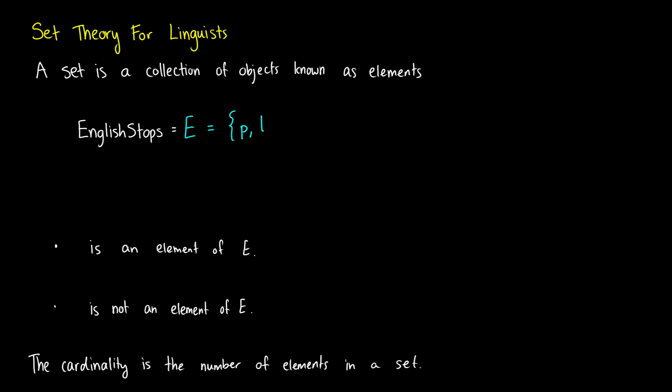So you might think of something like the set of English stops. We know that in English we have P, T, K, B, D, G, and because we're being fancy, we'll include the glottal stop as well. We can give it a full name like English stops, or we could just give it a single letter to make things easy, and sometimes we put the letter above it.